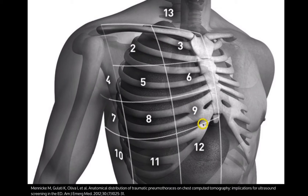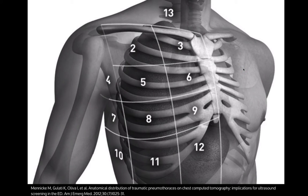There's a study where they took CT scans of patients with pneumothoraces and found the majority were in regions 9, 12, and 11 — not where we tend to think. So I usually start down here. On the left side it gets tricky because the heart gets in the way, so I find the heart and go one rib space above it to be the most sensitive. If the patient is hypotensive and crashing, I only look at the anterior chest wall.